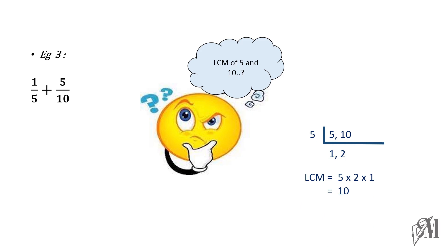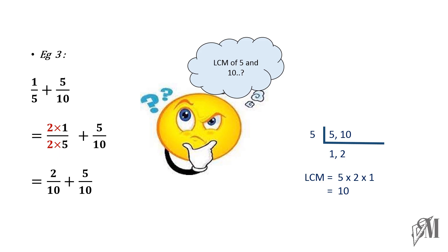So, what you have to do is convert the denominators of the two fractions to 10. Already one fraction has the denominator as 10. In order to get 10 in the first fraction, you have to multiply both the numerator and denominator by 2, and then you get 2 over 10 plus 5 over 10. The final answer is 7 over 10.